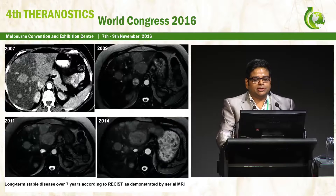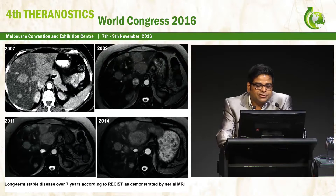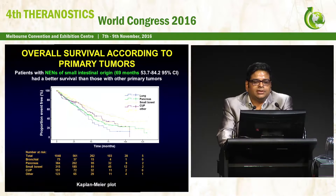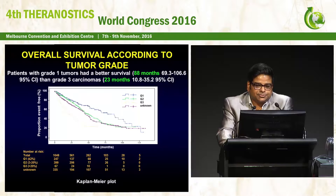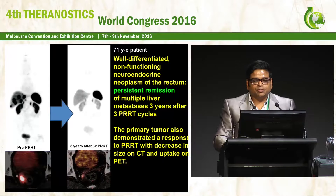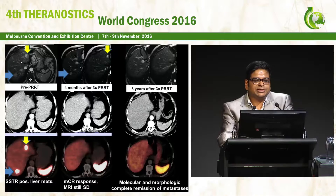This case shows long-term stable disease in a patient treated over seven years, according to RECIST. The longest overall survival was seen in primary tumors of small intestinal origin, and also in patients with G1 tumors. Another case shows a very good response to PRRT with complete remission of liver metastases and partial remission of the primary tumor, also seen on morphological imaging with a significant decrease in size.